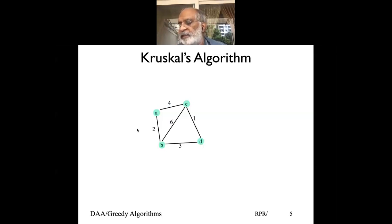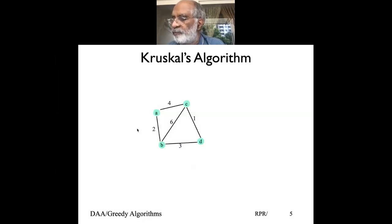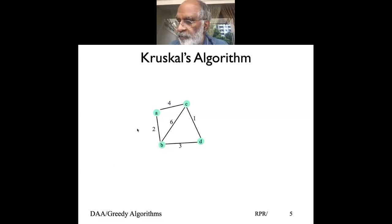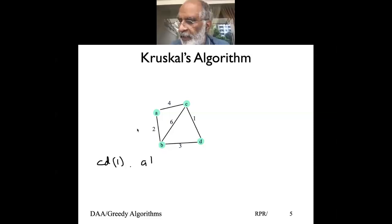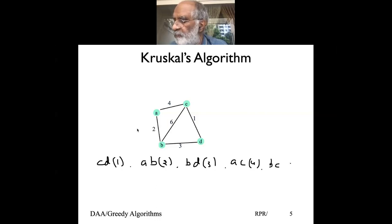Let's look at this with the following example — a graph A, B, C, D with five edges. Assuming if you were to sort, C-D would come first. So my first edge would be C-D, cost 1. Then I would have A-B, cost 2. Then B-D, cost 3. Then A-D or A-C, cost 4. Then B-C, cost 6.